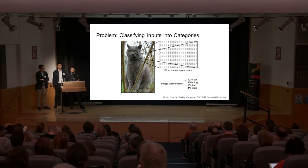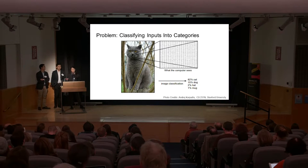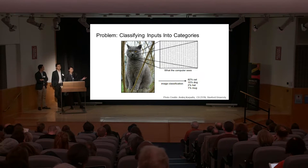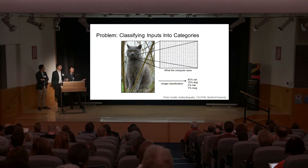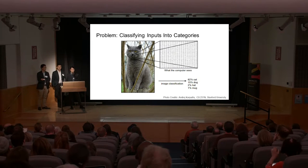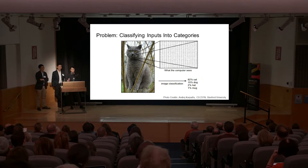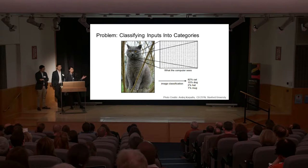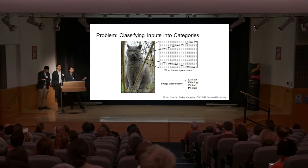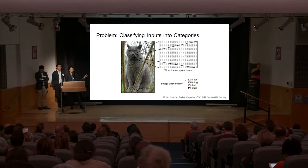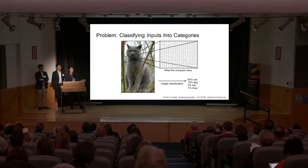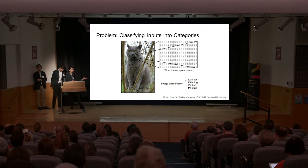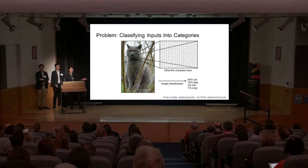Consider the problem of classifying inputs into categories. Here we have an image and we have the categories of cat, dog, hat, or mug. For a human it might be straightforward; it's a little bit harder for a computer. At a high level, what a neural network does is it takes an input and it computes a score for each category. The higher the score, the more likely that input is of that category. In this case, it's most likely to be a cat, which seems pretty reasonable.